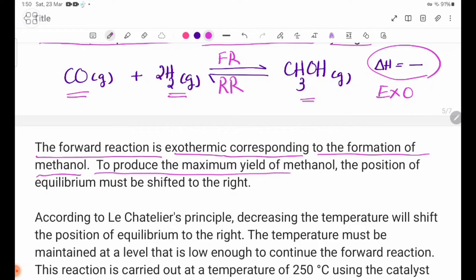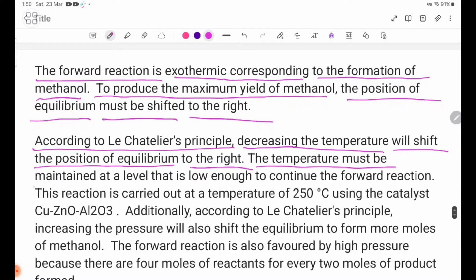To produce the maximum yield of methanol, the position of equilibrium must be shifted to the right. According to Le Chatelier's principle, decreasing the temperature will shift the position of equilibrium to the right. The temperature must be maintained at a level that is low enough to continue the forward reaction.